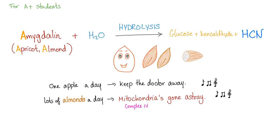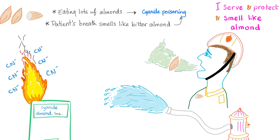Eating lots of apricots and almonds is bad for you because they contain amygdalin, which is hydrolyzed into hydrogen cyanide. Eating lots of almonds can lead to cyanide poisoning. However, in cyanide poisoning the patient's breath smells like bitter almonds.